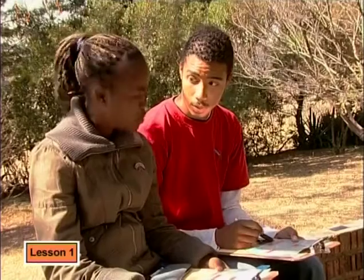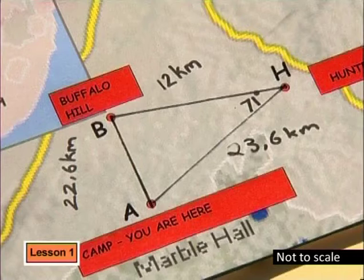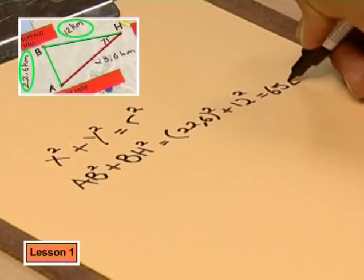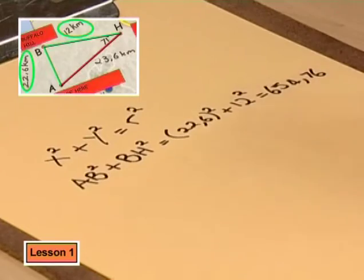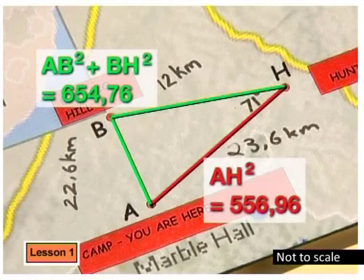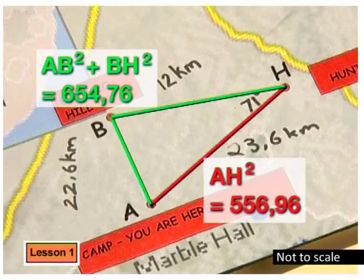The problem is that you both assumed it is a right-angled triangle, but trig ratios only work on right-angled triangles. We can check using Pythagoras' theorem: in a right-angled triangle, the square on the hypotenuse equals the sum of the squares on the other two sides. Here, 22.6 squared plus 12 squared gives 654.76, but 23.6 squared is 556.96. Since these don't match, this triangle is not right-angled, so we cannot use trig ratios directly.